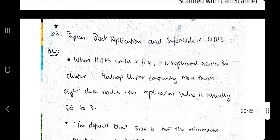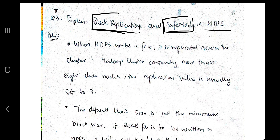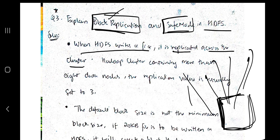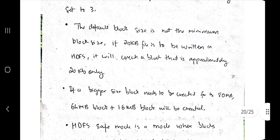Moving on to the third important question: explain block replication and safe mode in HDFS. For block replication, the first point is: whenever HDFS writes a file, it is replicated across the cluster — the file is written in all the nodes present, not just one node. In a Hadoop cluster containing more than eight data nodes, the replication value is usually set to three.